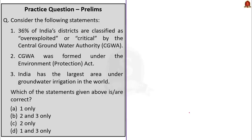First question. Consider the following statements. One: 36% of India's districts are classified as over-exploited or critical by the Central Groundwater Authority (CGWA). Two: CGWA was formed under the Environment Protection Act. Three: India has the largest area under groundwater irrigation in the world. Which of the statements are correct?